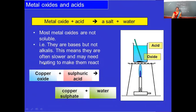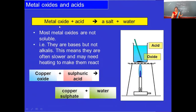For example, copper oxide (CuO): when copper oxide reacts with sulfuric acid, we get the respective salt of the acid — that is copper sulfate — and the byproduct is water. This is the same as a neutralization reaction because metal oxide is basic in nature, so base reacts with acid to form salt and water.